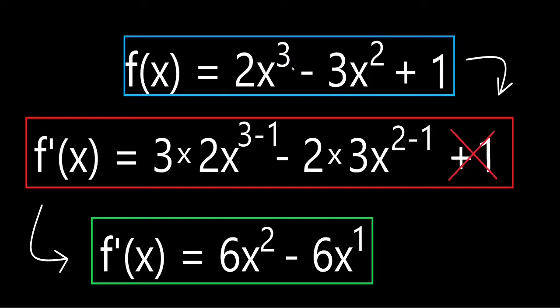You take the original function and you form the derivatives of each element. The derivative of 2x to the power of 3 would be 3 times 2x to the power of 3 minus 1, which would be 2 in the end.